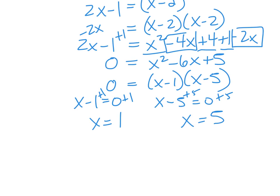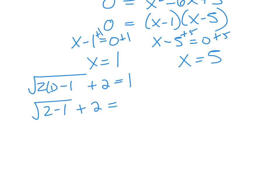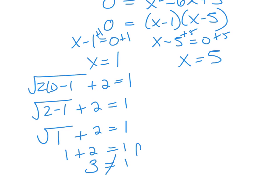Our solution set looks to be x equals 1 and x equals 5, but we must always check to make sure. Substituting x equals 1 back into the original equation: the square root of 2 times 1 minus 1 plus 2 should equal 1. That gives us the square root of 1 plus 2 equals 1, so 1 plus 2 equals 1, which means 3 equals 1. That is a false statement, so x equals 1 is not a solution.